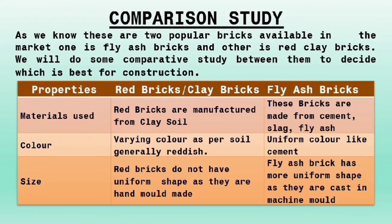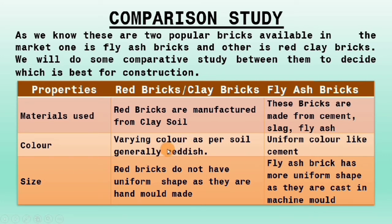Now we will see the comparison study — which brick is better, red clay brick or fly ash brick? These are two popular bricks available in the market and we have to do some comparative study to decide which one is better. Looking at the table: the materials used — red bricks are mainly manufactured from clay or soil, while fly ash bricks are mainly manufactured from cement, slag, and fly ash.